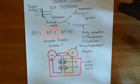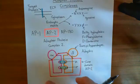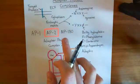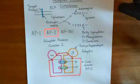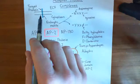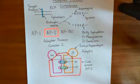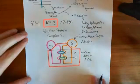Welcome to this next video in which we are discussing adaptor protein complexes. We want to understand how we get this adaptor protein to the plasma membrane, how we target it to the plasma membrane, because it actually binds to another protein before it binds to the target protein for endocytosis. So we're now going to discuss that interaction with this initial protein.